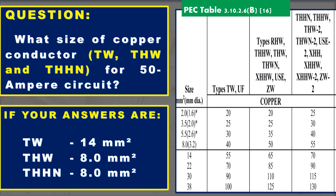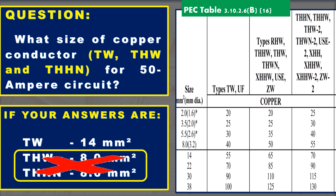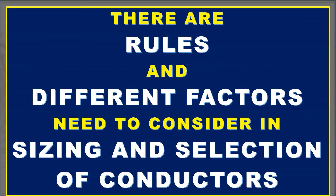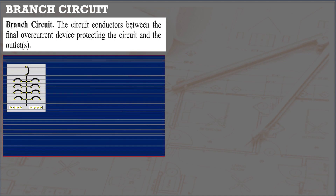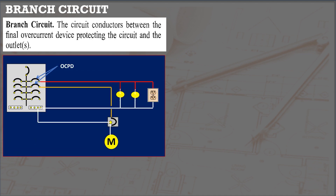Let's go back to the earlier question — why is 8 squared millimeters THW and THHN not correct? In selecting and sizing conductors, there are rules and different factors to consider. A safe electrical system starts from the very basic wiring fundamentals: the branch circuit. In code definition, a branch circuit consists of the circuit conductors between the final overcurrent device protecting the circuit and the outlets. It could be a non-motor load such as lighting, receptacle outlets, water heaters, etc., or a motor load circuit.